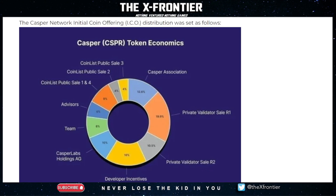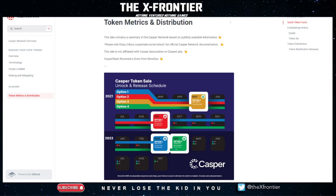Let's look at the ICO distribution from support.casperlabs.io. Casper Labs holds about 10%, team and advisors make up 14%, public sales account for about 17%, the Casper Association (the non-profit arm) holds 12.6%, the two private validator sales account for about 30%, and the remaining 16% went to developer incentives. As mentioned, all private and public token sales have been unlocked — so there are no remaining vesting periods to worry about.